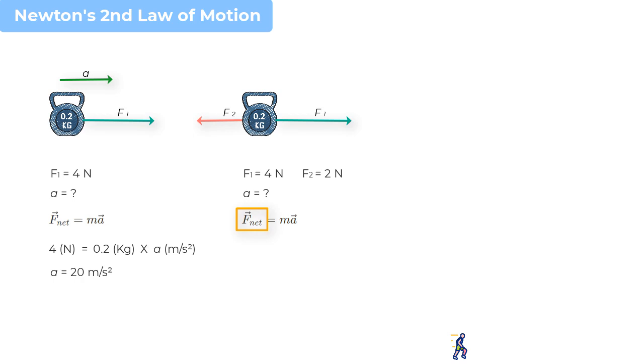So, F1 is acting in the positive x direction. And we write it as plus 4N. F2 is acting in the negative x direction, that is minus 2N. Then we go ahead to the right hand side of the equation, and we write it as 0.2 into a. And when we solve for a, what we find is it equals 10 meters per second squared.